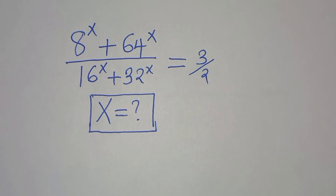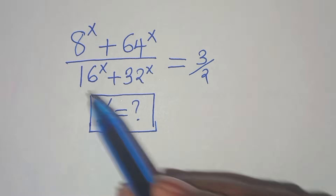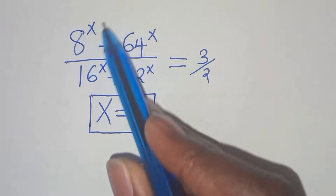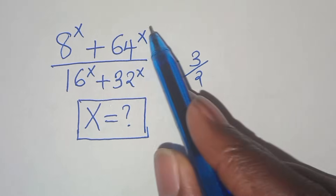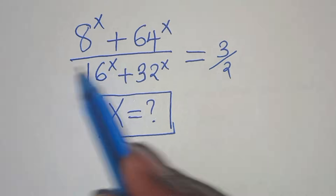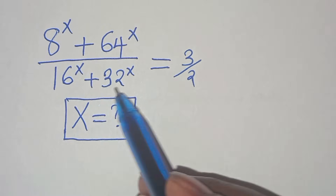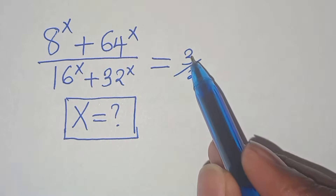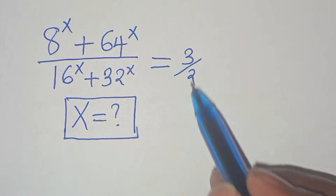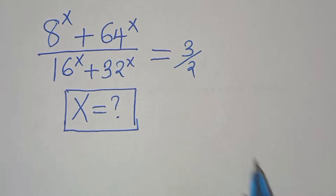You are welcome to solve this nice math problem, which is (8 to the power of x plus 64 to the power of x) divided by (16 to the power of x plus 32 to the power of x). This is equal to 3 over 2. So what is the value of x?